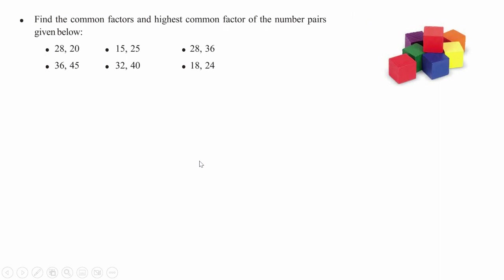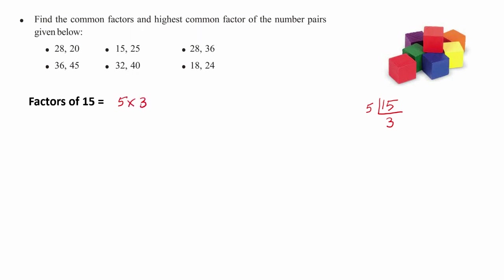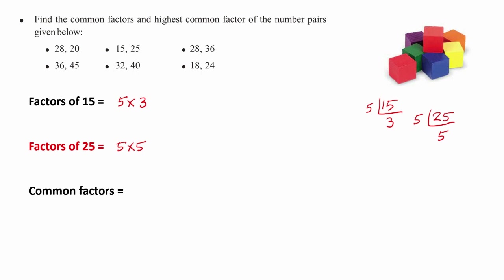Find the common factor and highest common factor of 15 and 25. Then we have factors of 15. 15 is equal to — 5 times 3 equals 15, three times. 5 equals 3, and 5 equals 25. 25 is equal to 25. 2 equals 3, 4 equals 5, 5 equals 25. 5 equals 5. These are the common factors.